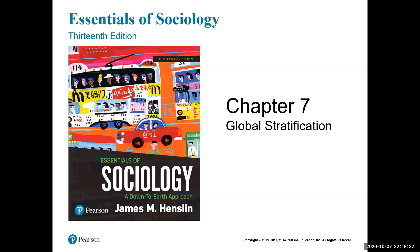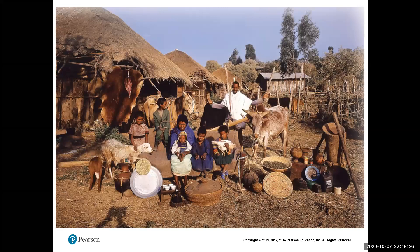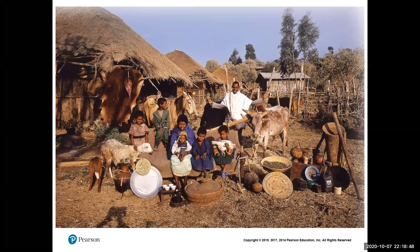Chapter 7 is about global stratification. The opening chapter talks about two different lifestyles. One is a 33-year-old male, his 28-year-old wife, and their seven children — a total family of nine — who struggle to avoid starvation. They live in a 320-square-foot plaster hut with no electricity, gas, or water.